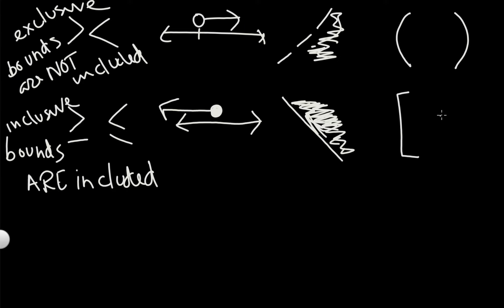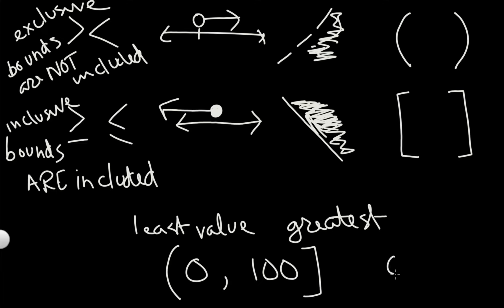So those are going to use the square blocks. So again, you look for your least value. Let's say in this case, it's zero. My greatest value. Let's say 100. And then is it included or not? Here, here. And again, this is going to be similar to my zero is less than x is less than or equal to 100.